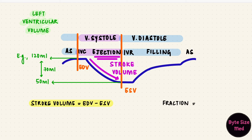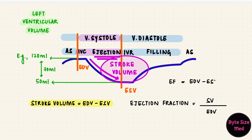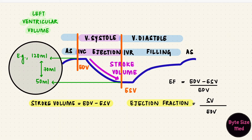The fraction of the end diastolic volume that the heart ejected is the ejection fraction. What did it pump out? The stroke volume. So the ejection fraction is stroke volume over end diastolic volume — in other words, the difference between end diastolic volume and end systolic volume, divided by end diastolic volume. With these numbers, that would be 70 over 120, which is 0.58 or 58%. The left ventricular ejection fraction is used to assess left ventricular function.